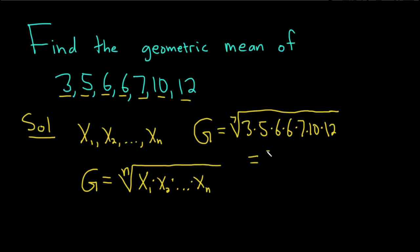This is a very big number. This is the 7th root of 453,600. So that would be the geometric mean. Now we just have to compute what this number is.